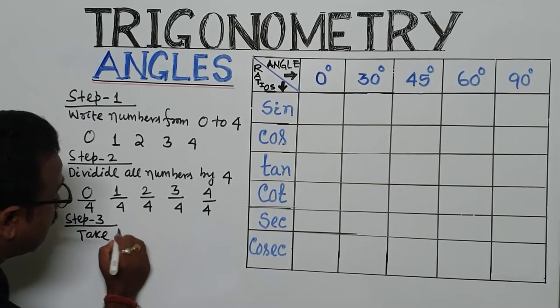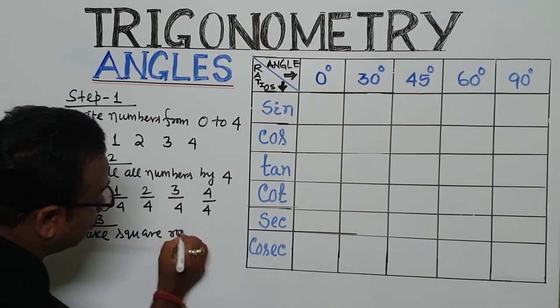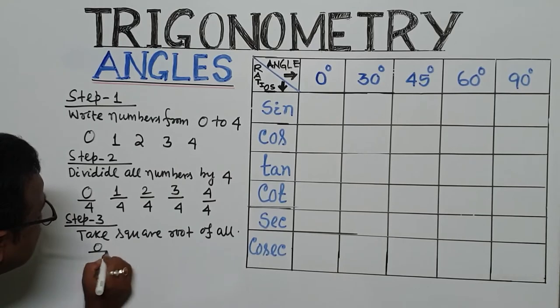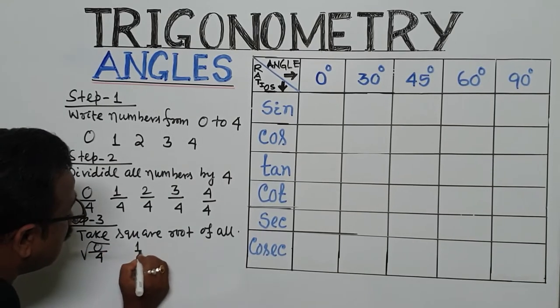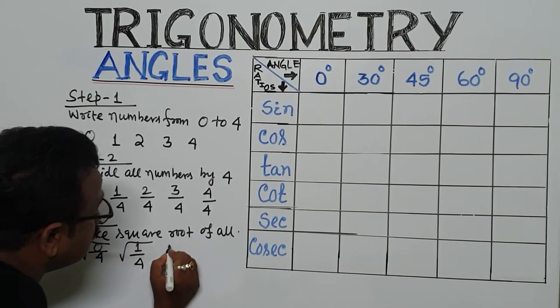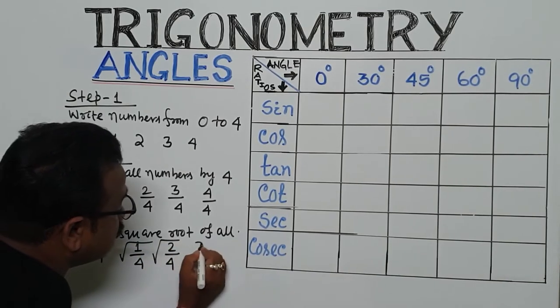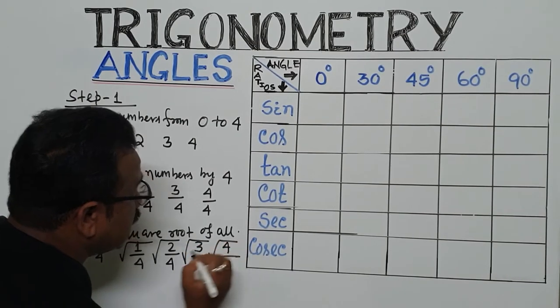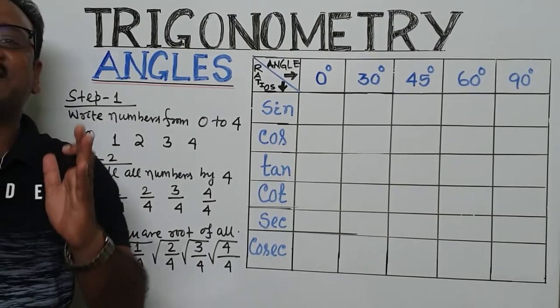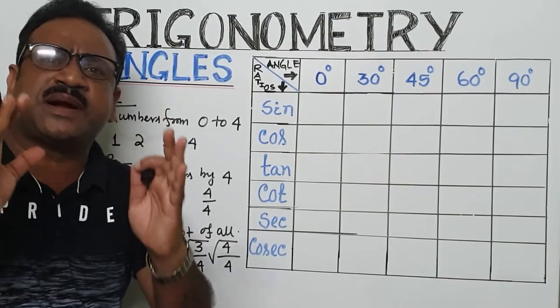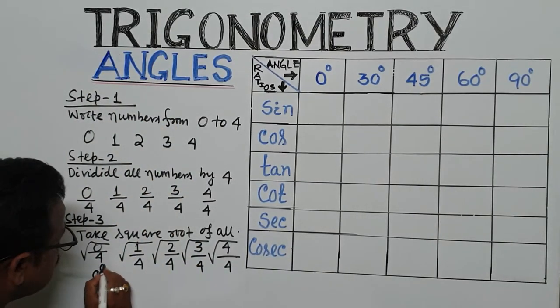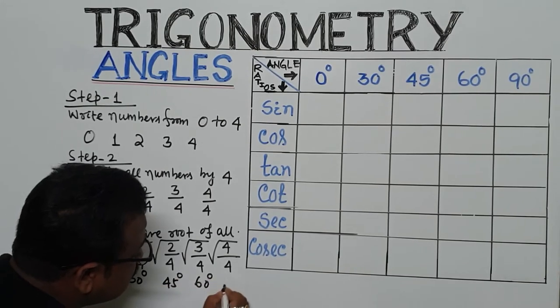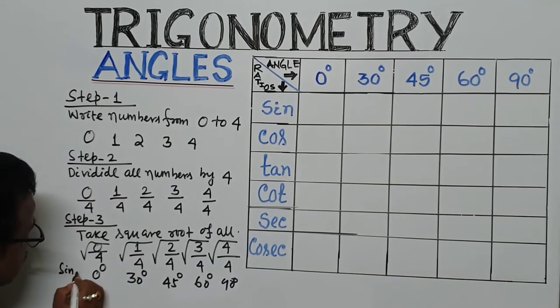Step 3: Take square root of all. So, 0 by 4 square root, 1 by 4 square root, 2 by 4 square root, 3 by 4 square root, 4 by 4 square root. Now, after taking the square root, we will find the trigonometric angles. So this will be 0 degree, 30 degree, 45 degree, 60 degree, and 90 degree of sine.